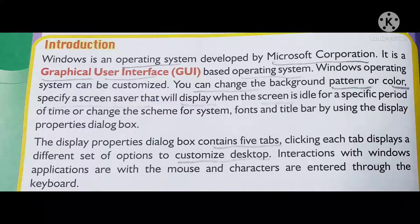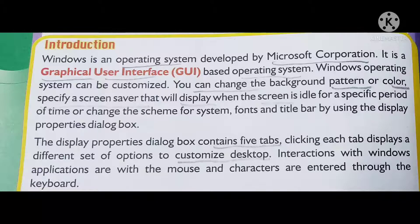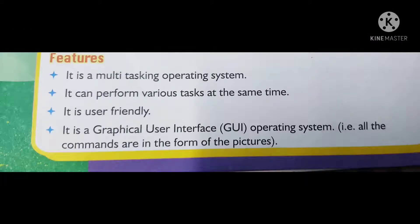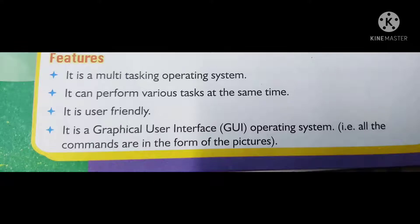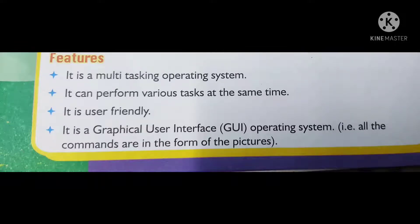We can interact with Windows applications using the mouse, and characters are entered through the keyboard. It is a multitasking operating system — we can do various tasks at the same time. It is user-friendly and a graphical user interface, shortly called GUI, operating system, meaning all commands are given in picture format.